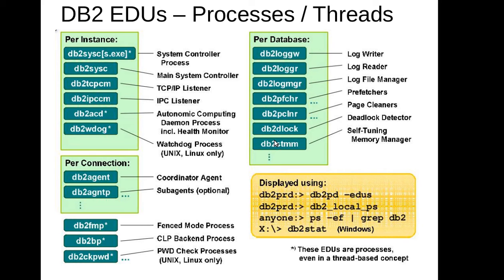To list processes at the instance level, we use the OS command: ps -ef grep db2. To check processes at the database level, we use the DB2 command: db2pd -edus. EDUs stands for Engine Dispatchable Units. Prior to version 9.1, database processes were also listed using ps -ef, but starting from 9.1 they introduced thread technology, so you need db2pd -edus to see database-level processes.